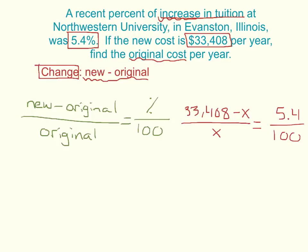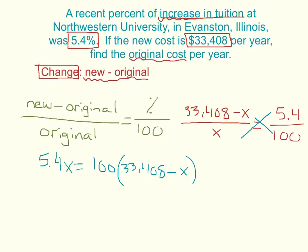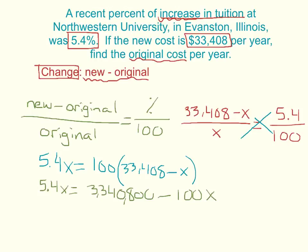It looks complicated because we have x in two different spots, but we can cross multiply. So this gives 5.4x equals 100 times the whole quantity — 100 times (33,408 minus x). We have to distribute the 100 and then solve from there. I now need to get my variables on one side, so I'm going to add 100x to both sides.